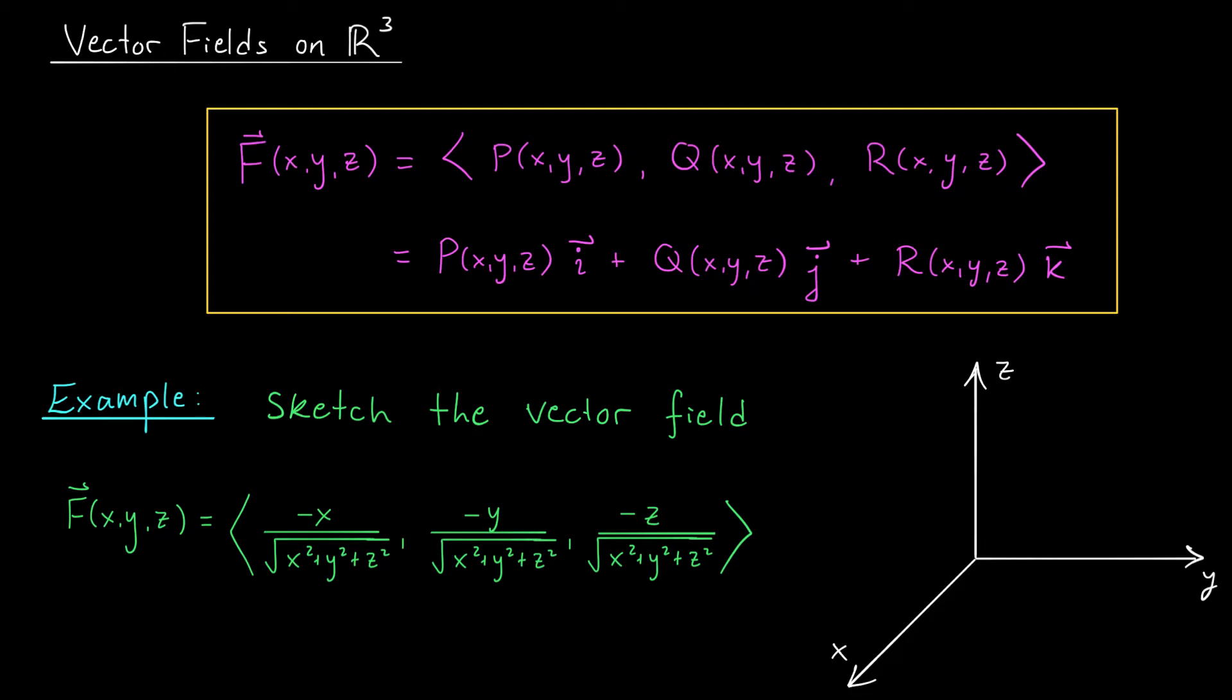So for example, let's see if we can sketch this vector field. This looks pretty nasty. F of x,y,z equals <-x over the square root of x²+y²+z², -y over that same denominator, -z over that same denominator>. Well, we could plug in points and plot the vector outputs just like on the last slide. But if you're clever, you might be able to avoid this. Notice that in this example, we have the same denominator in each component function, the square root of x²+y²+z². This quantity actually has some geometric significance. It's the norm of the vector <x,y,z>. So I could rewrite this entire vector as minus <x,y,z> divided by the norm of <x,y,z>.